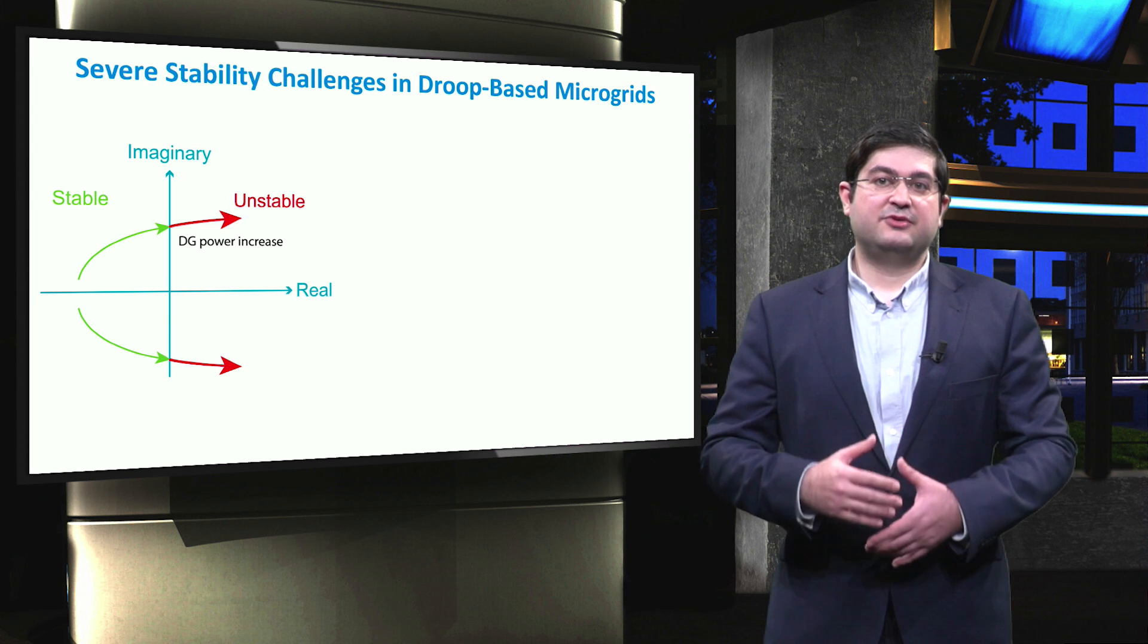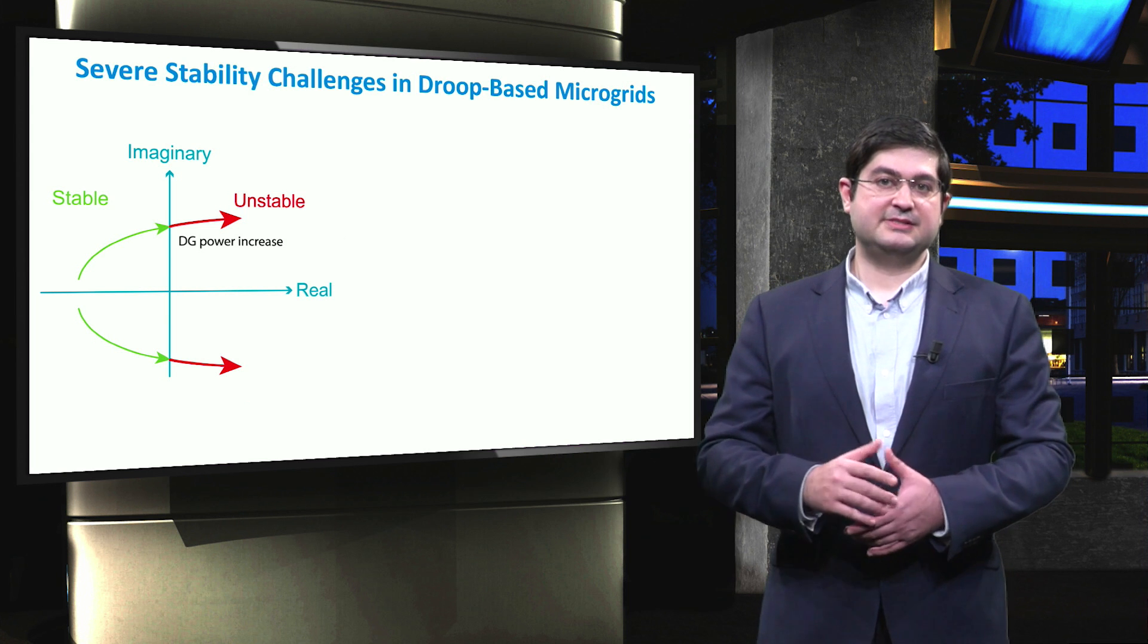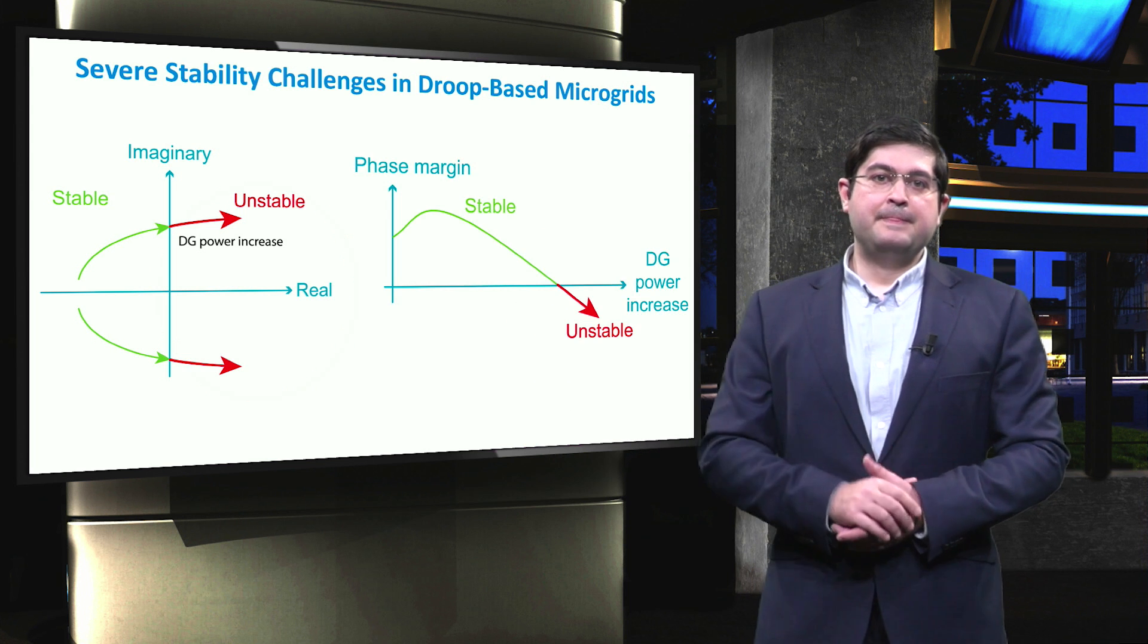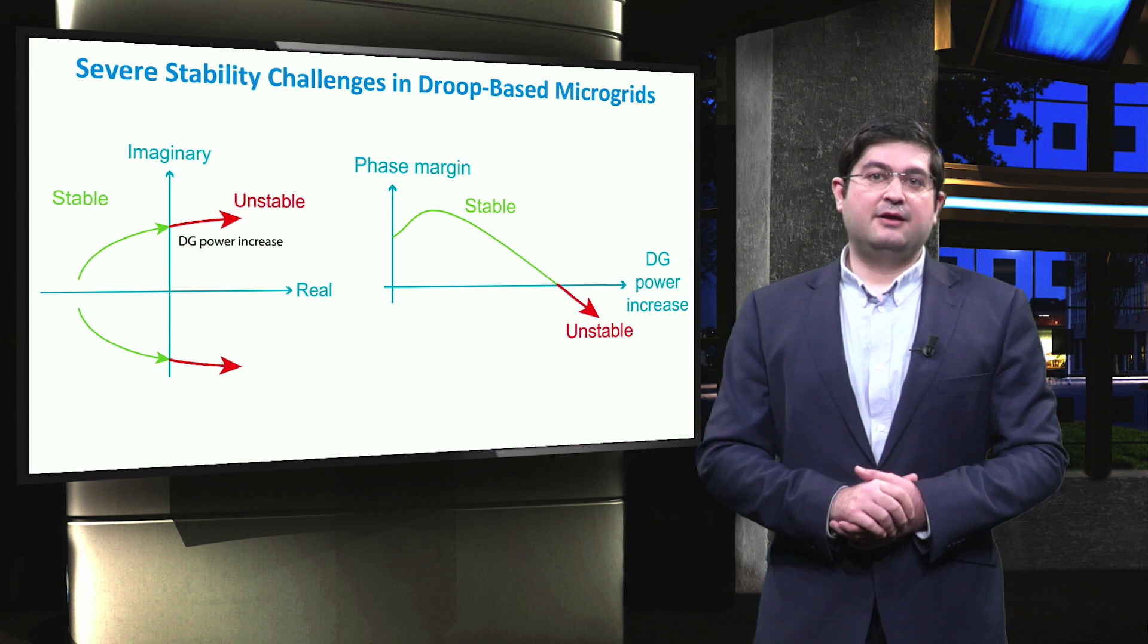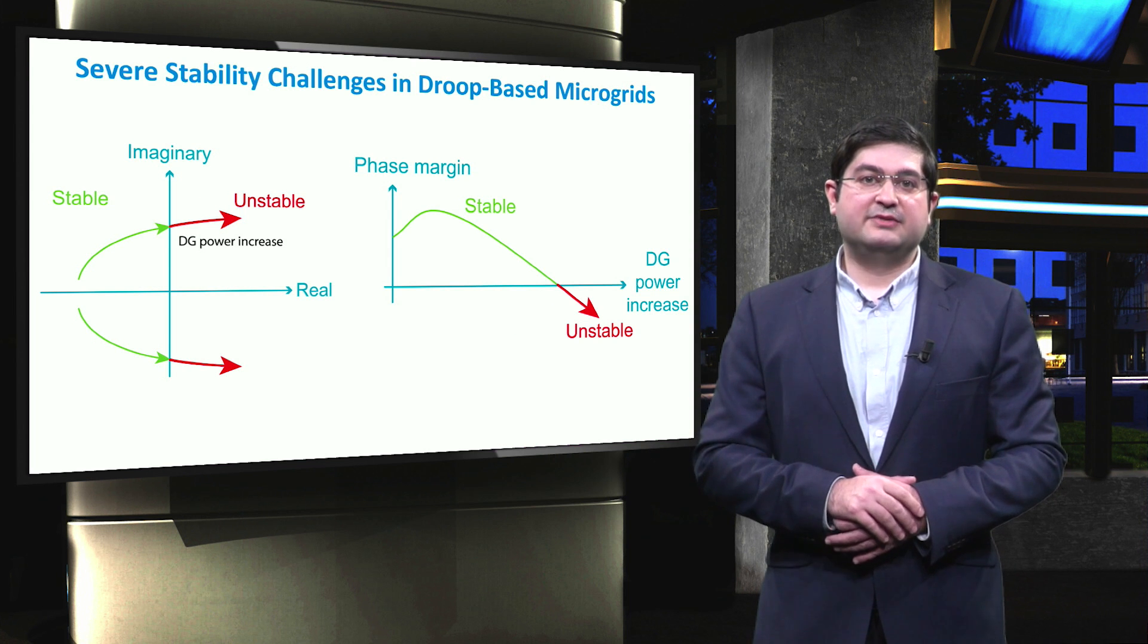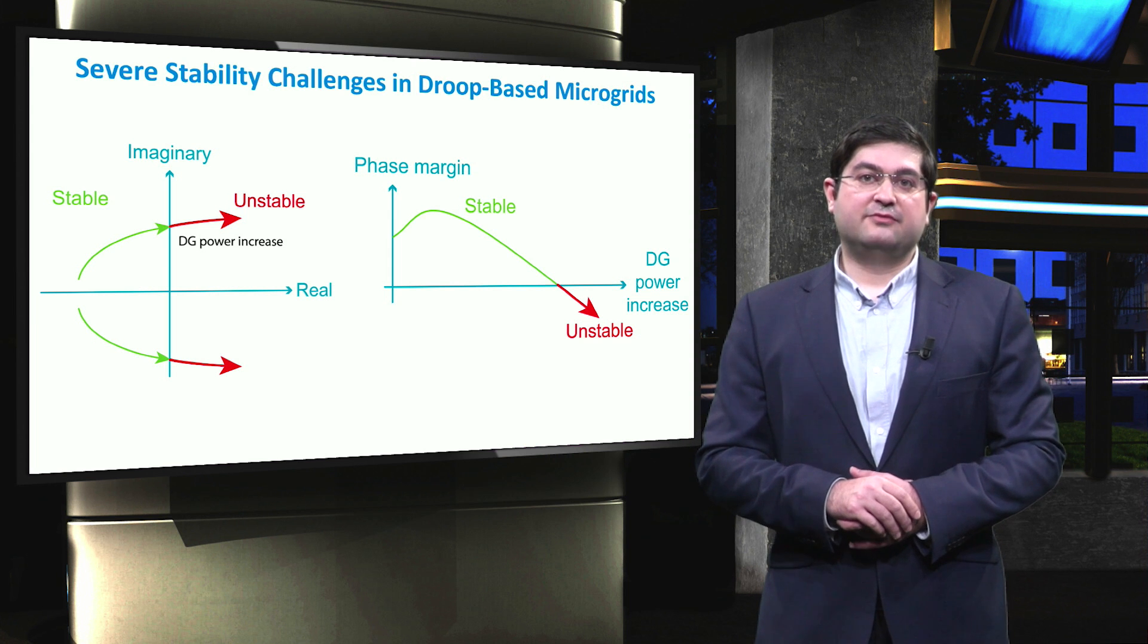So, for instance, when the penetration rate of DGs increases, then it may enter the unstable region. As shown in the figure on the left, we show the overall stability margin of the system versus the power increase of the DG.